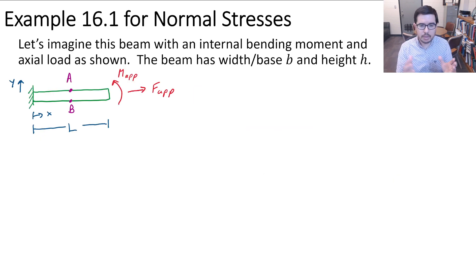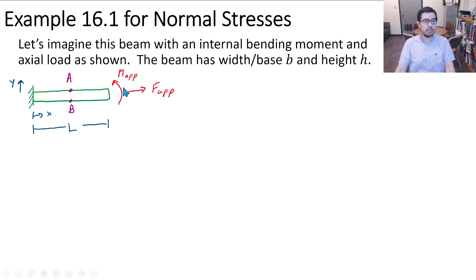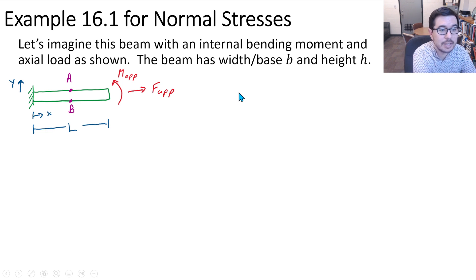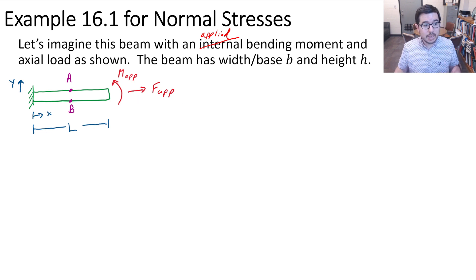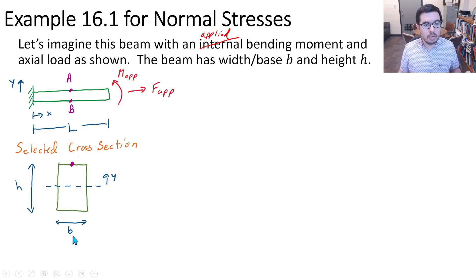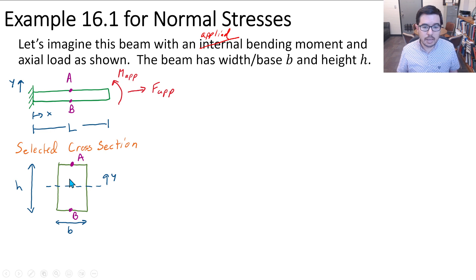Let's do an example. We have a beam with an applied bending moment M_app and axial load F_app as shown. The beam has width or base b and a height h, so the cross-section has width b and height h. We're interested in the state of stress at points A and B, which are at a selected cross-section along the beam.